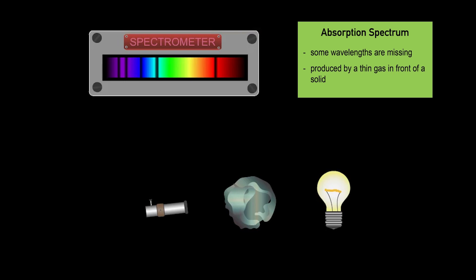This is the type of spectra we see from stars. All wavelengths of light are emitted by the dense interior of the star, but some wavelengths are absorbed by the low-density outer regions.